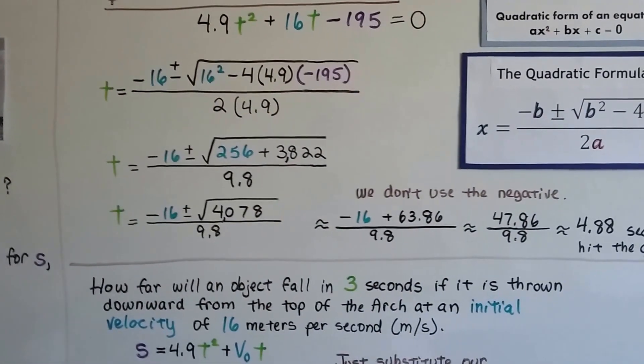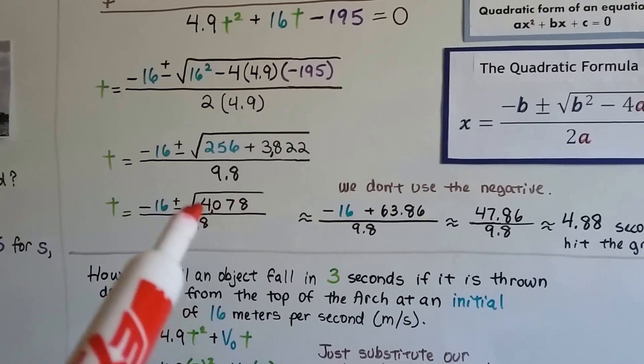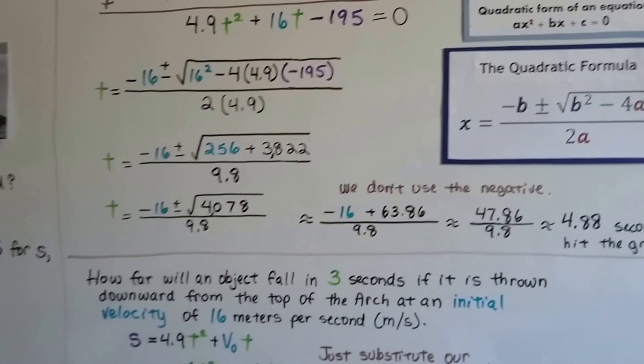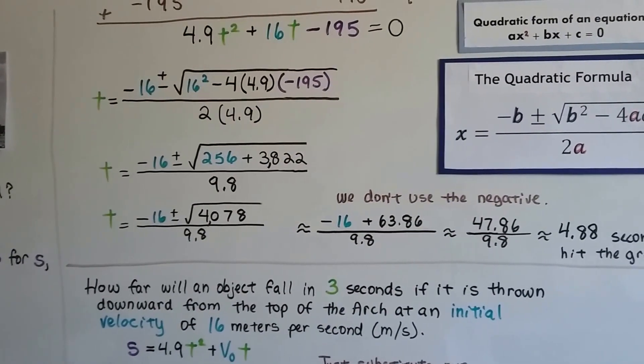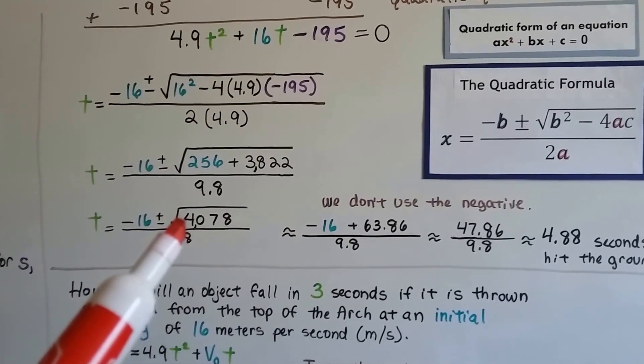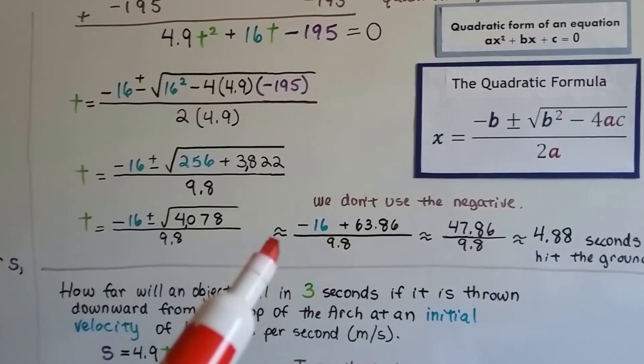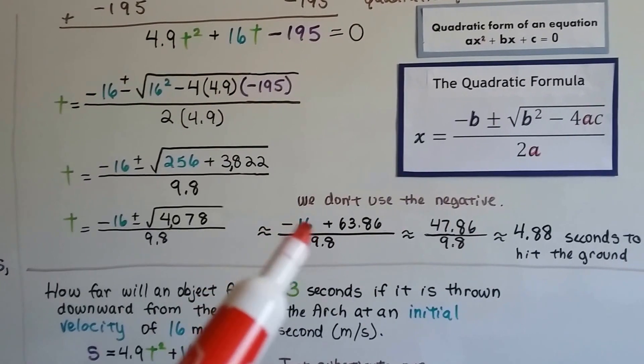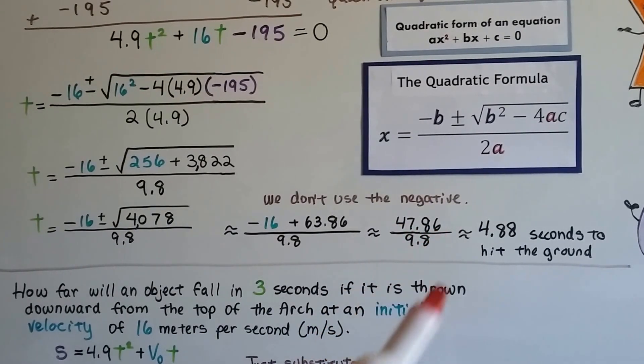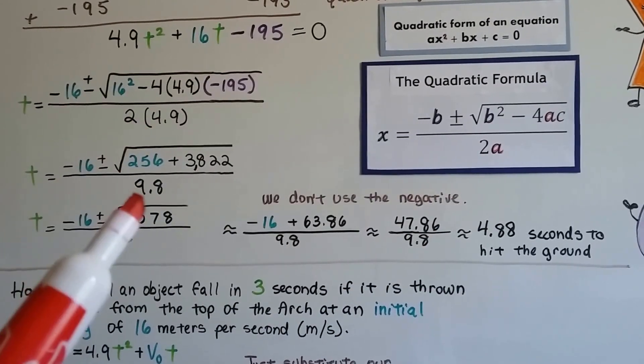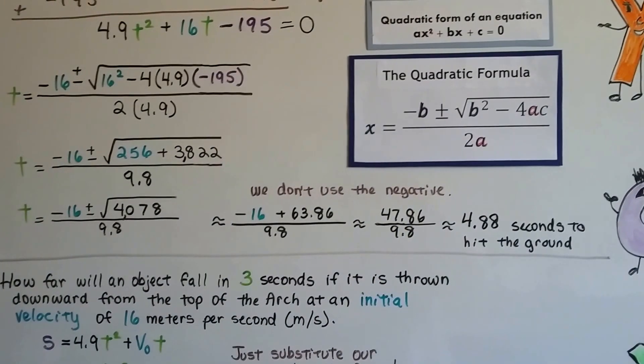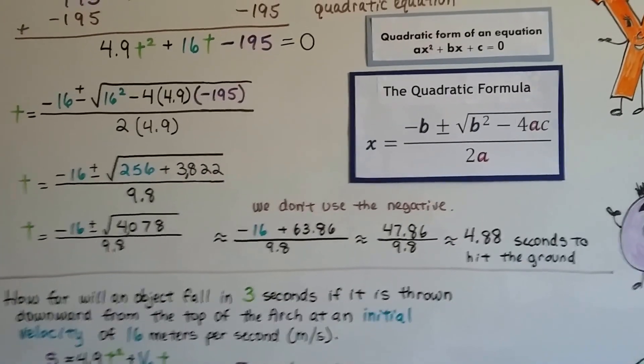Now we don't use the negative. We're not going to use that because we're dealing in measurements and it's not going to be a negative measurement. So we just need the positive number. We use our calculator to find the square root of 4,078 and it's 63.86 approximately. We have negative 16 plus 63.86, which gives us approximately 47.86. When we multiplied this 2 times the 4.9, we got the 9.8. Now all we have to do is take this 47.86 and divide it by the 9.8, we get about 4.88 seconds for it to hit the ground.